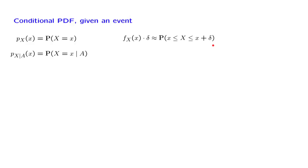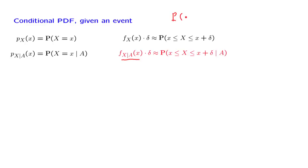If we move to a conditional model in which event A is known to have occurred, probabilities of small intervals will then be determined by a conditional PDF, which we denote in this manner. We need to assume throughout that the probability of the conditioning event is positive, so that conditional probabilities are well defined.